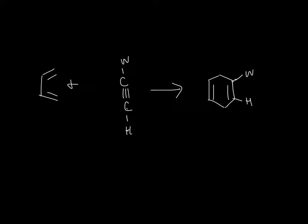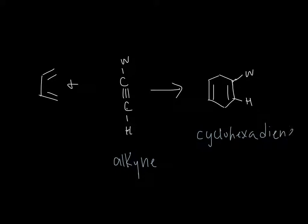In our second example, we have a very simple diene — just a regular conjugated 4 pi electron system with no donating group. And our dienophile this time is an alkyne. Thus, our product looks slightly different but it's the same concept. In our product this time, we have a cyclohexadiene instead of a cyclohexene — a cyclohexane ring with two carbon-carbon double bonds, hence the diene part.